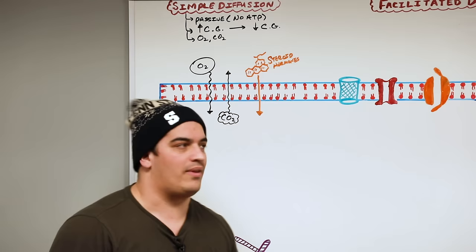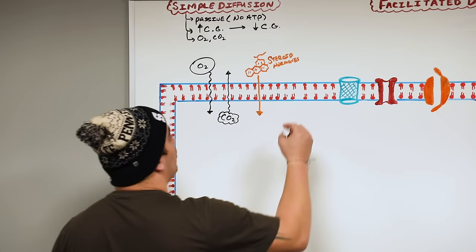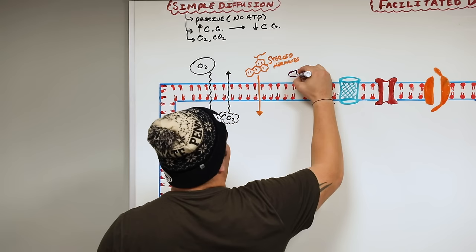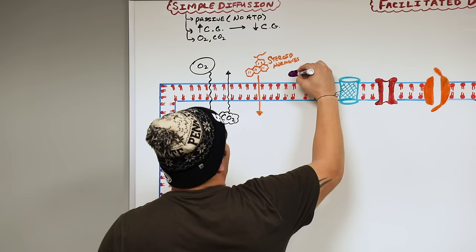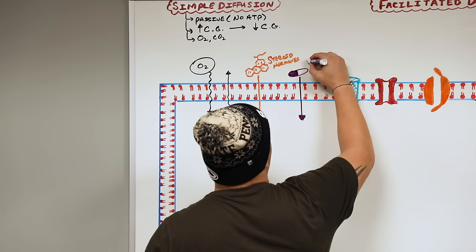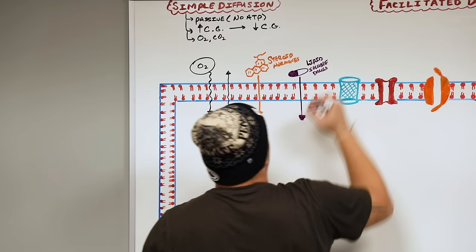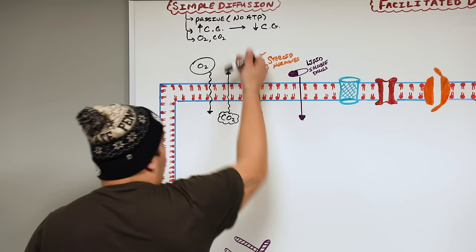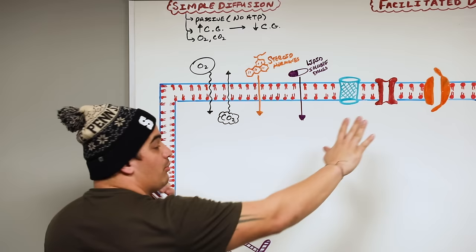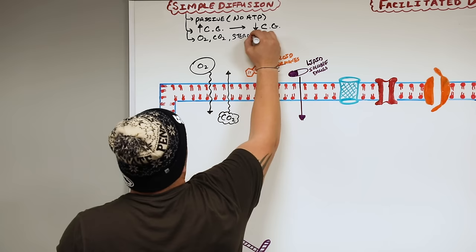Don't forget lipid soluble drugs. Drugs that are really lipid soluble also have the ability to pass through the cell membrane without needing a transport carrier. So the molecules that can move by simple diffusion — across the cell membrane without needing a transport protein — are oxygen, CO2, steroid hormones, and lipid soluble drugs.